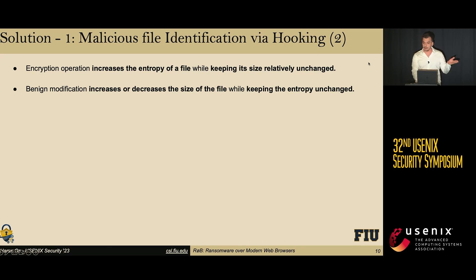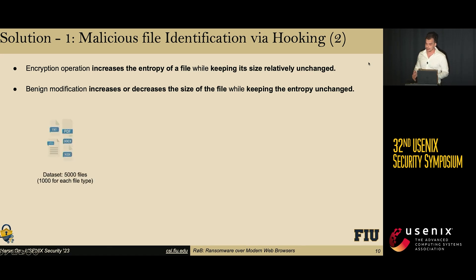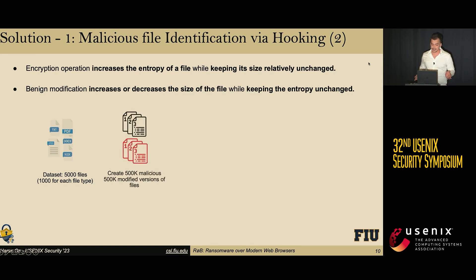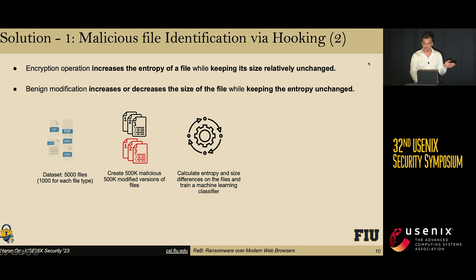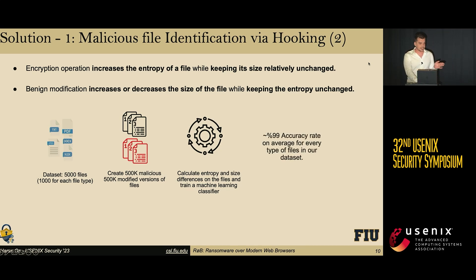To implement this defense solution, we collected a rich file dataset consisting of 5,000 files, and created their benign modified and encrypted versions. We calculated entropy and size differences after modification and encryption, trained five different machine learning classifiers, and achieved a 99% accuracy rate on average.